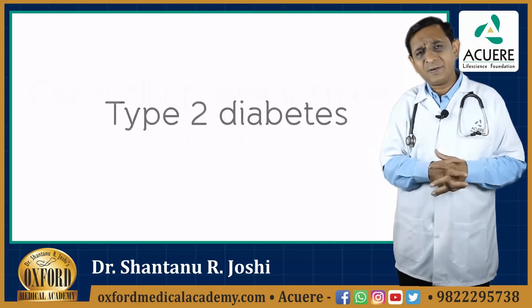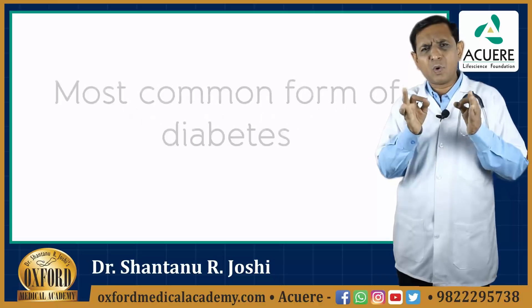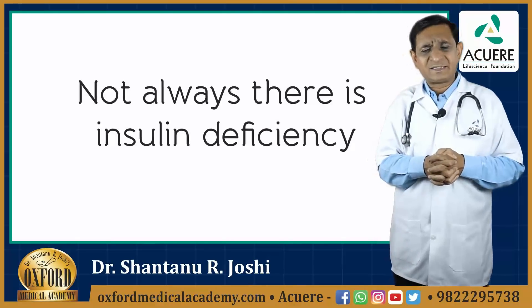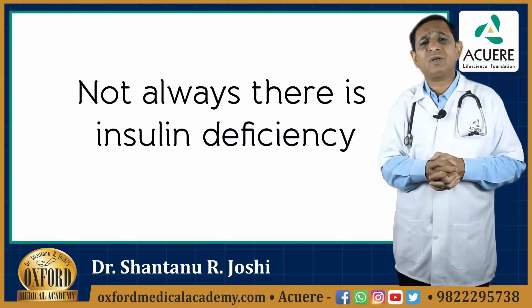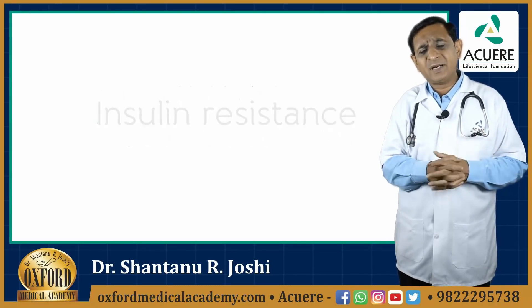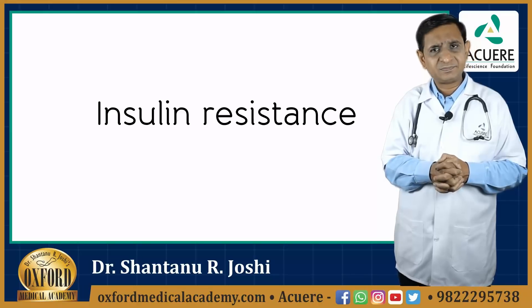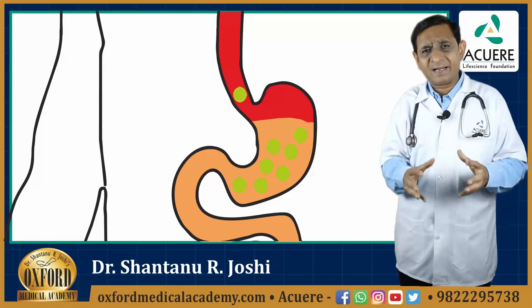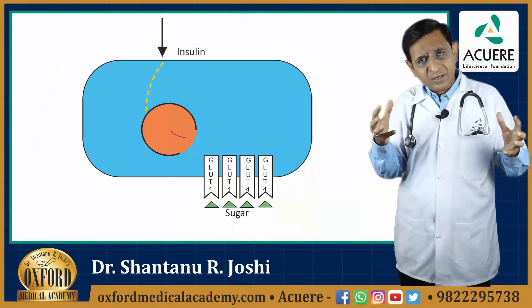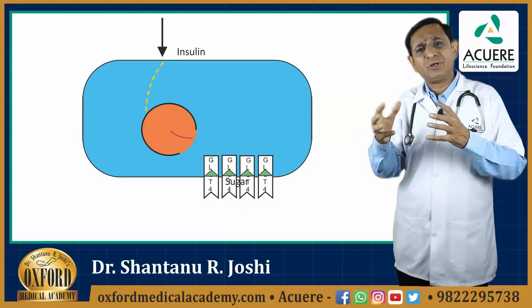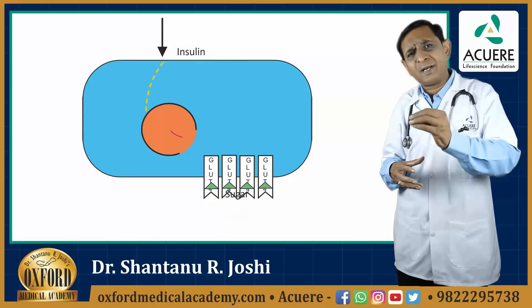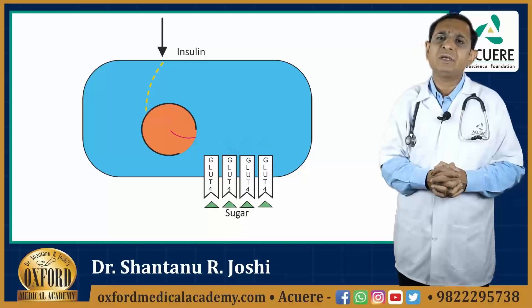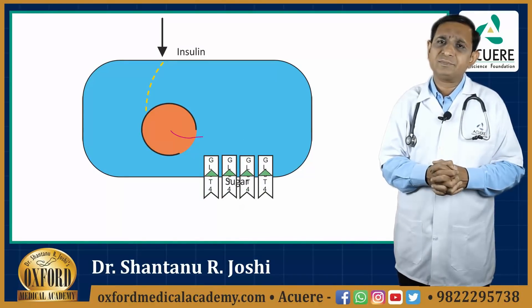Now, type 2 diabetes is the most common form of diabetes. With experiments it is now well established that not always there is insulin deficiency, but most of the times there is insulin resistance, and this is a very important concept. Suppose one person is taking a high caloric diet for a long time. Due to the high availability of sugar, more insulin will be secreted, more GLUT receptors will be recruited, more sugar will enter the cell, and there will be much more stores of sugar as glycogen.